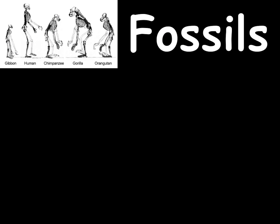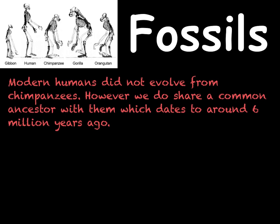You have looked at the formation of fossils previously within B2. However, fossils can be used to tell us or give us clues about what human ancestors were like. Our closest living relative at the moment are chimpanzees, sharing about 97% of their DNA with us. Evidence from fossils suggests that we split from chimpanzees around 6 million years ago, which would be our closest common ancestor.